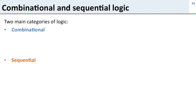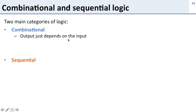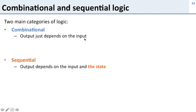Let's cover the two main categories of logic: combinational logic and sequential logic. Combinational logic is where the output just depends on the input — this is what you've seen before. In all the circuits we made, you could tell exactly what the output was just by knowing what the inputs were.